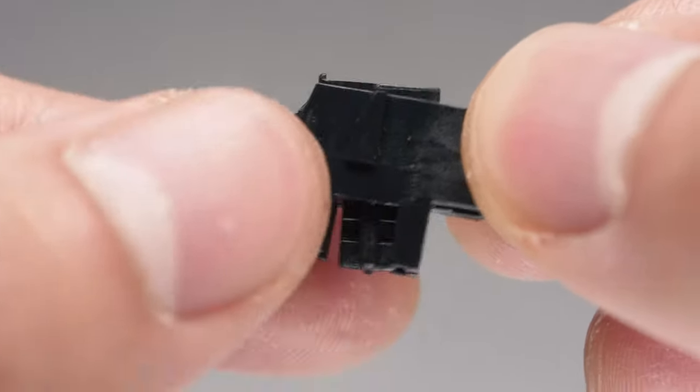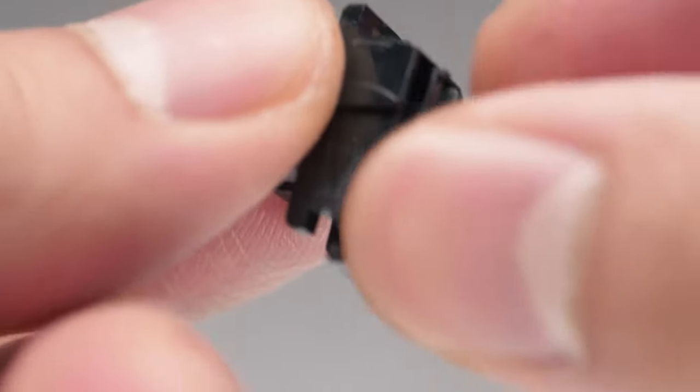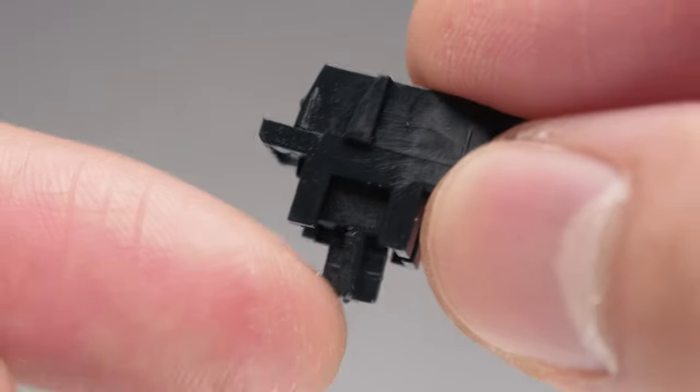If it's backwards, the stem won't go all the way through. To fix that, let the insert fall out, flip it around, and put it back in.